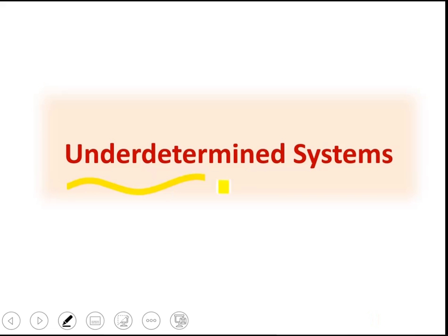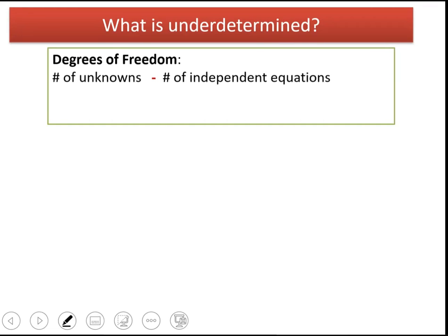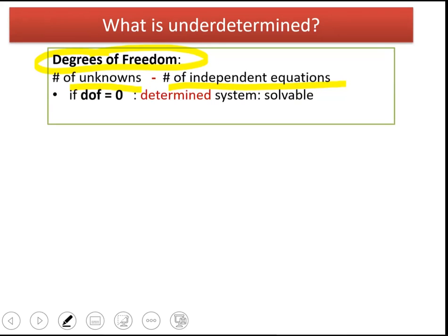Here I will talk about underdetermined systems. What is underdetermined? I will define degrees of freedom of a system. Degrees of freedom is the difference between the number of unknowns and the number of independent equations. If degrees of freedom is zero, it means the number of unknowns is equal to the number of independent equations.